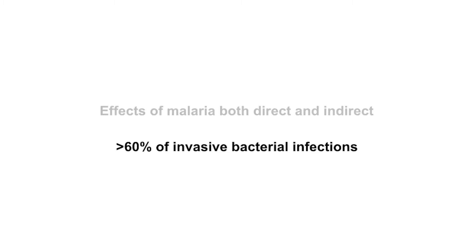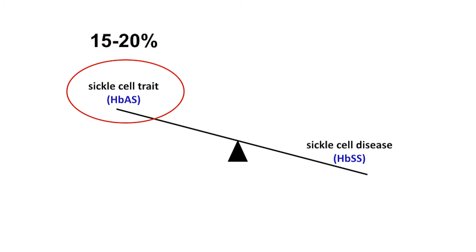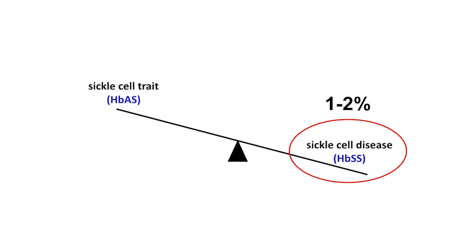Sickle cell trait is the strongest known selective protective gene known to man. The consequence is that an awful lot of people in sub-Saharan Africa are born with sickle cell trait — 15% to 20% of children across the middle part of Africa where there's a lot of malaria. And the consequence of that is that about 1% to 2% of children are born with sickle cell disease. Now, this isn't such a good thing to have. Sickle cell trait is a tremendous thing to have; sickle cell disease is a very bad thing to have, particularly in a malaria-endemic environment.